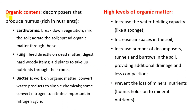Organic content helps plant growth through decomposers that produce humus, which is rich in nutrients. Earthworms help break down vegetation, mix the soil, aerate it and spread organic matter through the soil. Fungi feed directly on dead matter and digest hard woody items, enabling plants to take up nutrients through their roots. Bacteria work on organic matter, converting waste products to simple chemicals, and some convert nitrogen to nitrates, which is important in the nitrogen cycle.